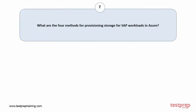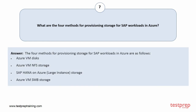Question number seven: What are the four methods for provisioning storage for SAP workloads in Azure? The four methods are: 1. Azure VM disks. 2. Azure VM NFS storage. 3. SAP HANA on Azure large instance storage. 4. Azure VM SMB storage.